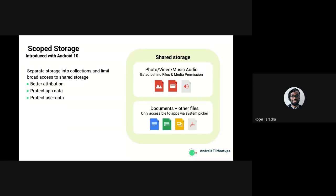Thirdly, protect user data. Think of it this way: if you have a PDF in your downloads directory — your tax returns, your M-Pesa statement, something with sensitive data — you probably don't want any other app to have access to that. Pre-Android 9, any app with storage permissions could access those files. But with scoped storage, there's better protection of user data.